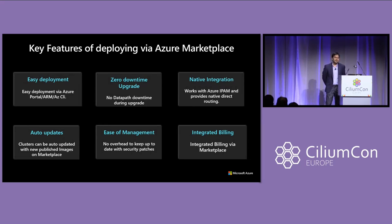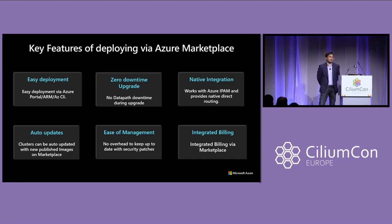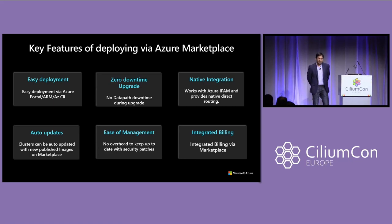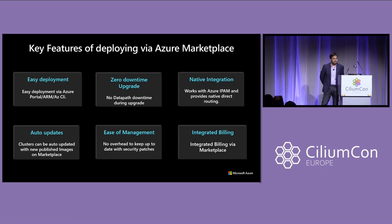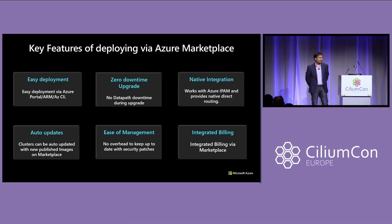There are a lot of benefits to deploying Cilium Enterprise via Azure Marketplace. You get easy deployment — with a single click of a button, you can upgrade from Cilium OSS to Cilium Enterprise with zero downtime. You get native integration with Azure IPAM and all Azure capabilities. You get auto updates, so if the Cilium Enterprise image is updated, it will automatically be upgraded in your cluster deployments. You get ease of management, with all security patches automatically applied, and you get integrated billing — one bill to track and pay.